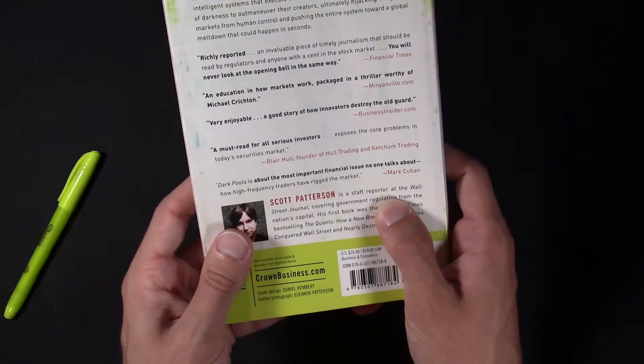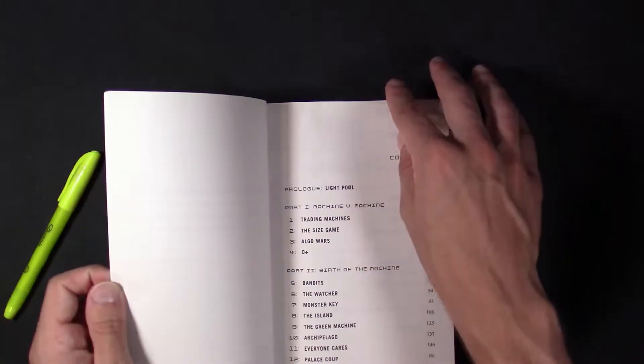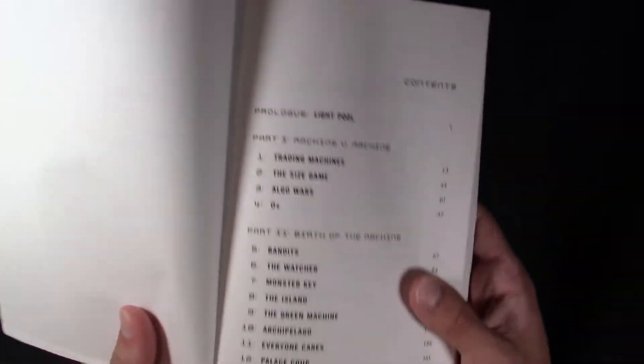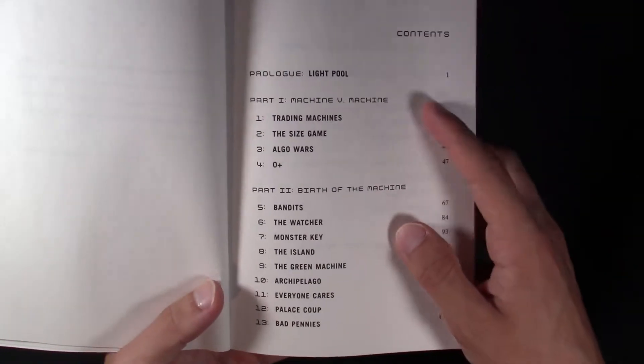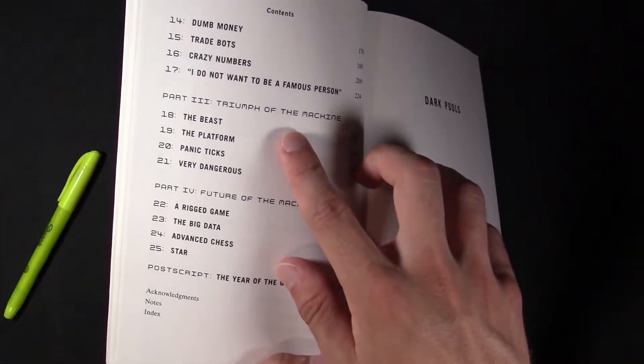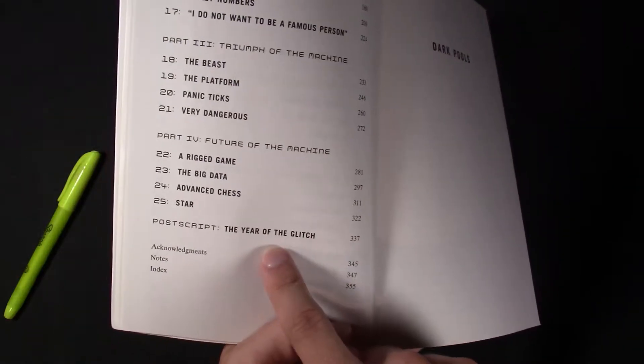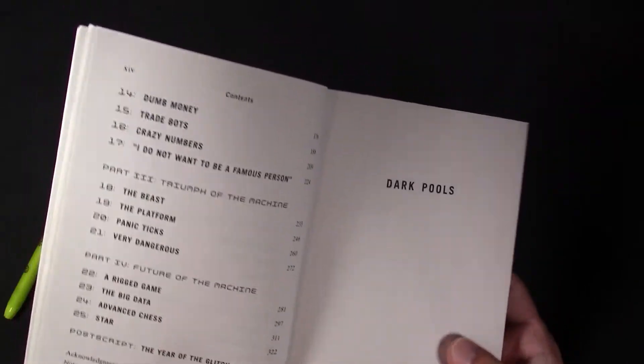He is a staff reporter at the Wall Street Journal. I like the Wall Street Journal. I try to read that every day. So we can briefly go over some things that goes into machine versus machine, the birth of the machine, the triumph of the machine, and the future of the machine, and then the year of the glitch. Titles don't really do too much actually, but it's got a cool font.